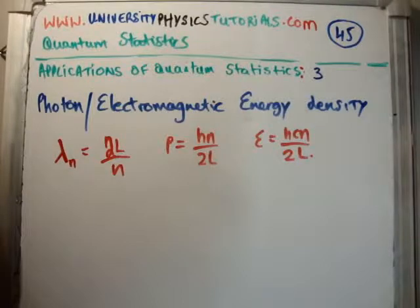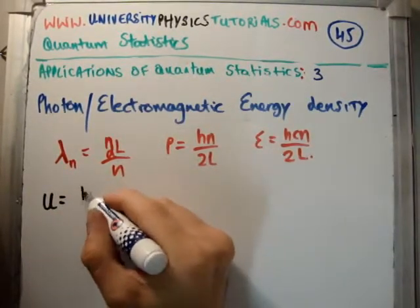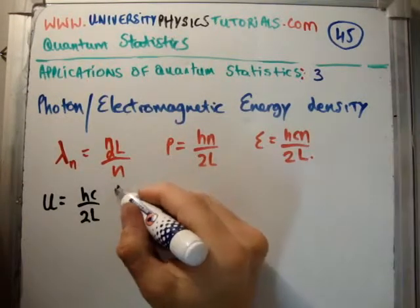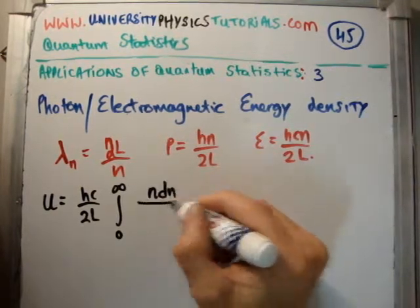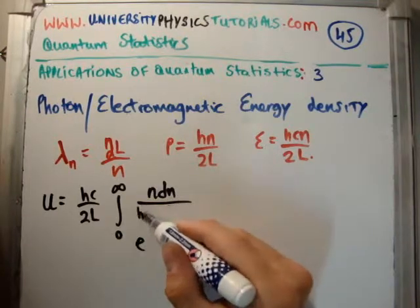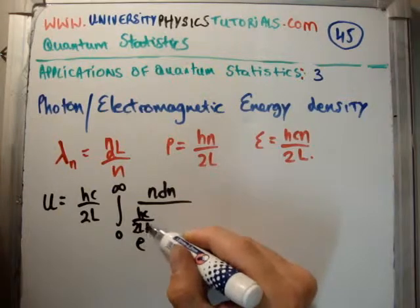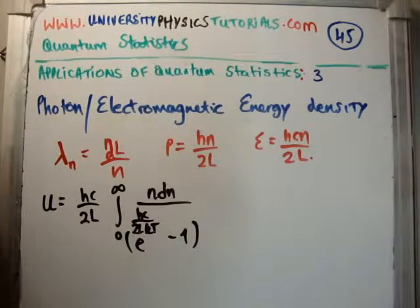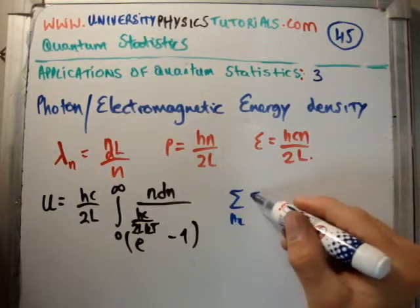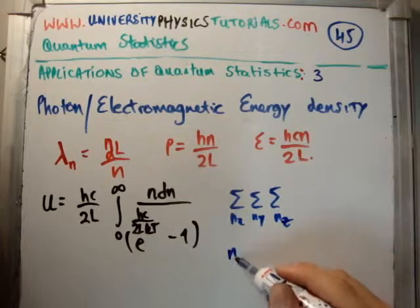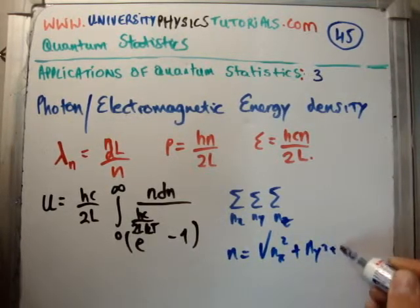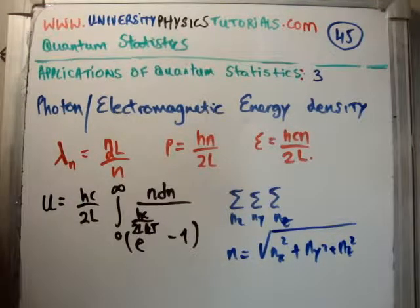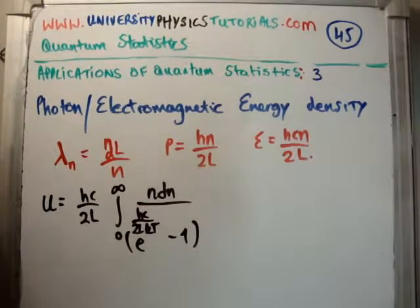Applying that to what we have, the total energy is going to be equal to hc over 2L times the infinite integral of N dN over e to the hcN over 2LkT minus 1. Now what I glossed over is that really I should be summing over N_x, N_y, and N_z, because N equals the square root of N_x squared plus N_y squared plus N_z squared. But I'm immediately approximating it as an integral because there are so many states it may as well be a continuum.